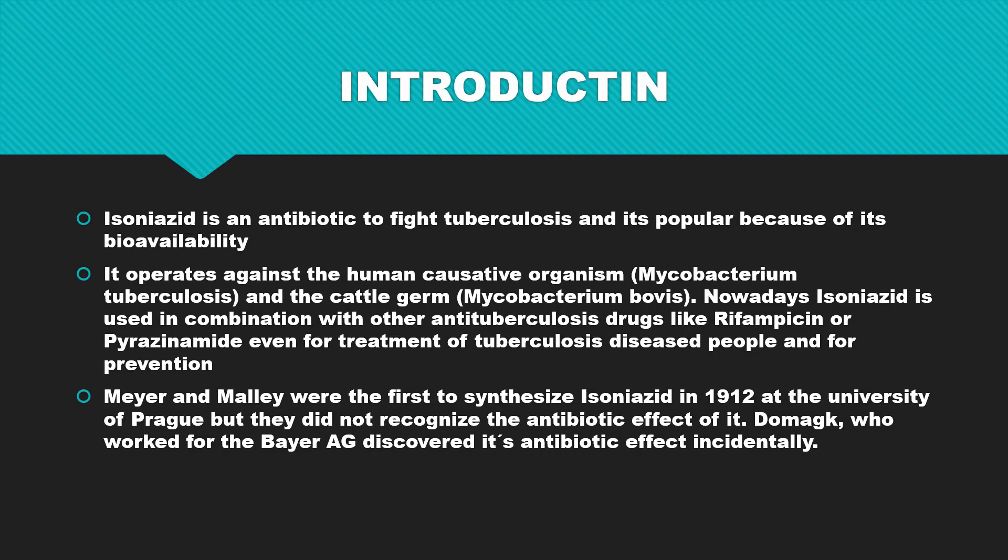Isoniazid was discovered by Mayer and Malley in 1912 at the University of Prague but they did not recognize the antibiotic effect of it. Domagk who worked for the Bayer AG discovered its antibiotic effect.